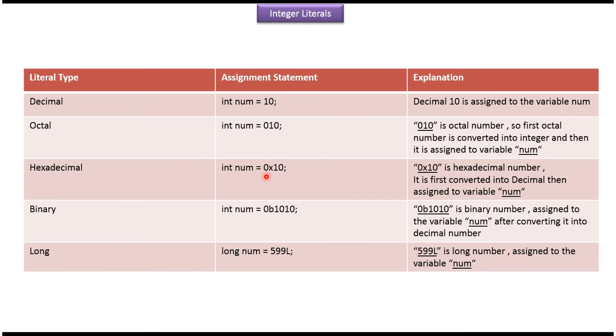This is how we can define hexadecimal number. This hexadecimal number will be converted into decimal, then it will be assigned to variable num. And this is how we can declare binary. This binary will be converted into decimal, then it will be assigned to num.